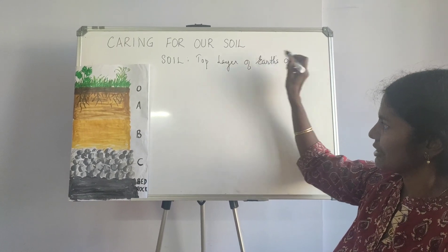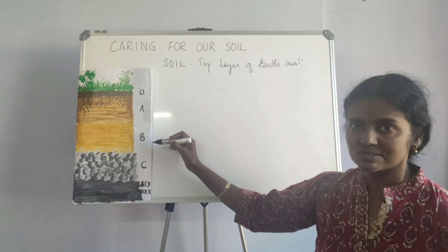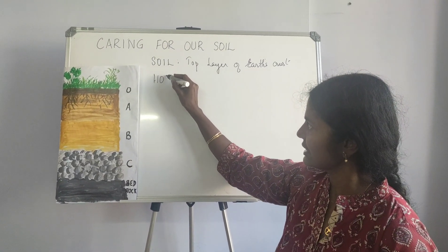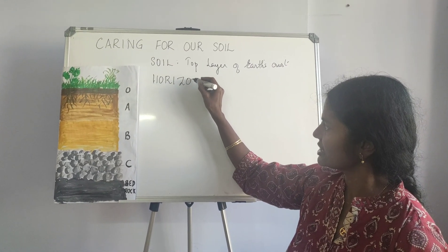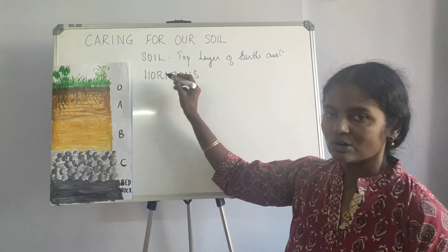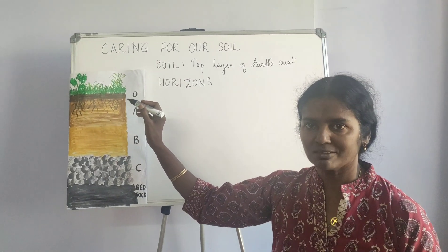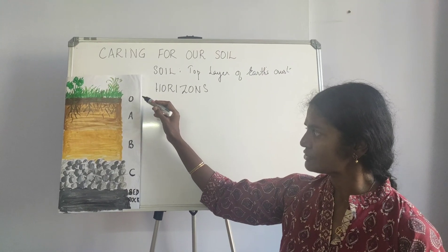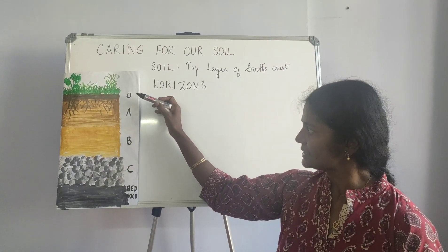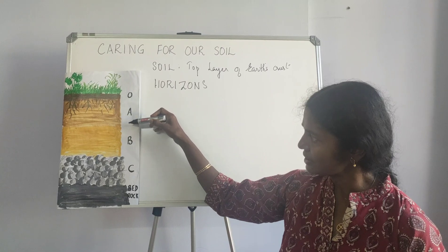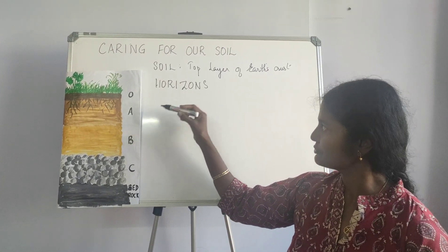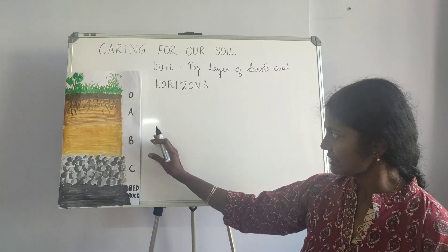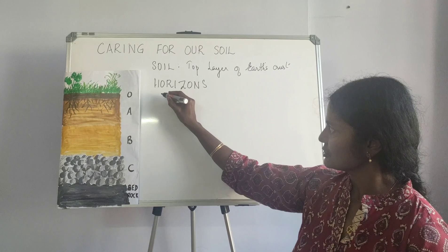This is the soil profile. There are different layers in the soil, and it is divided into different layers called horizons. This doesn't mean the horizon we talk about usually, but rather the different layers. Each horizon would have different texture and different color, and based on that, we categorize them into the first horizon.